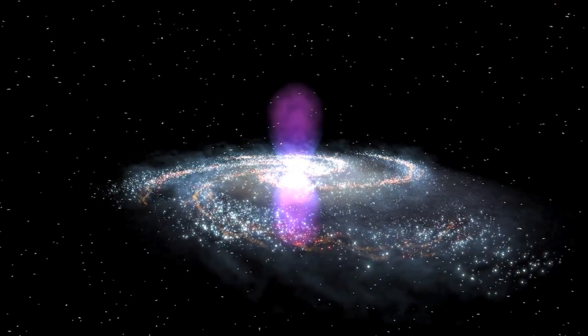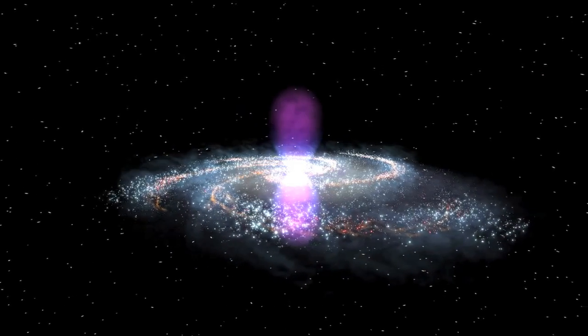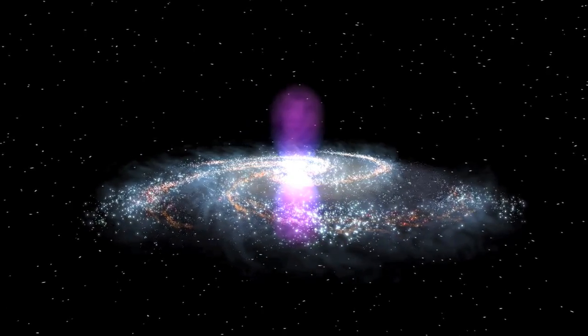The structure spans more than half of the visible sky, from the constellation Virgo to the constellation Grus, and it may have been around for millions of years.